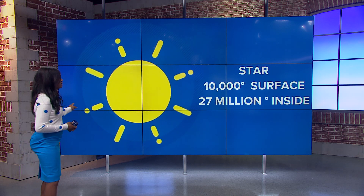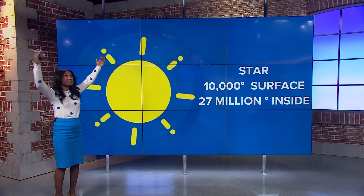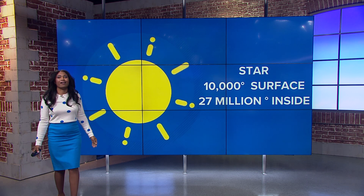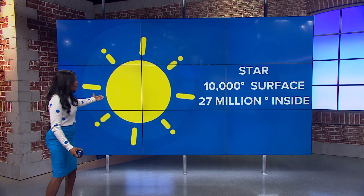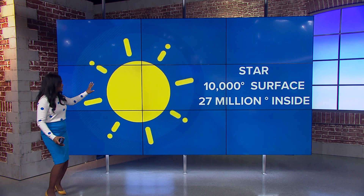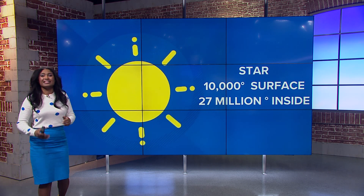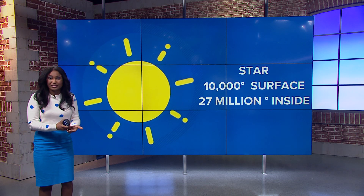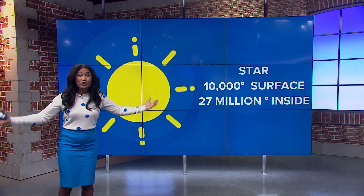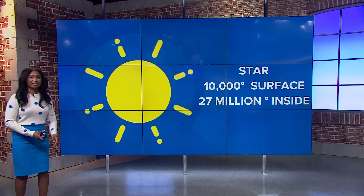Let's talk about the sun for a moment. Did you know that the sun is one big giant star? And it's a hot one — the surface of the sun is 10,000 degrees. Ouch, yeah, wouldn't want to touch that! And the interior of the sun is 27 million degrees. That is certainly really, really hot.